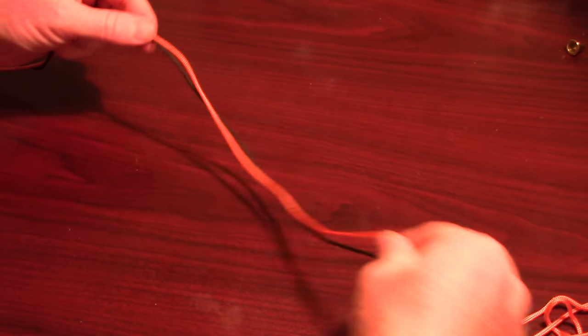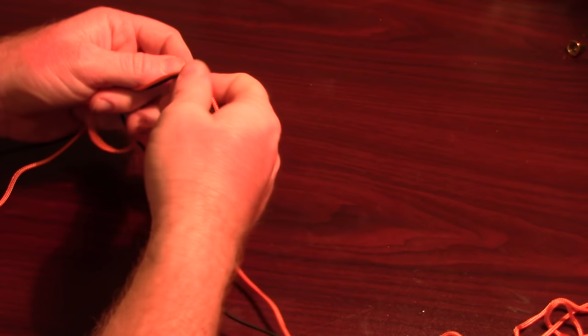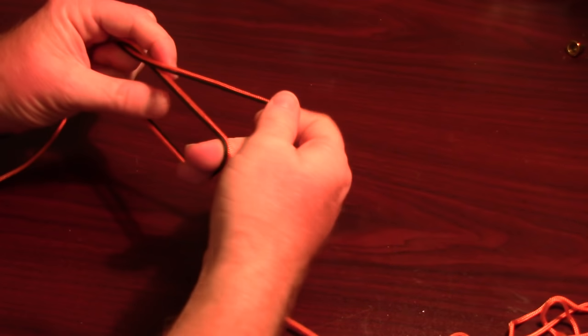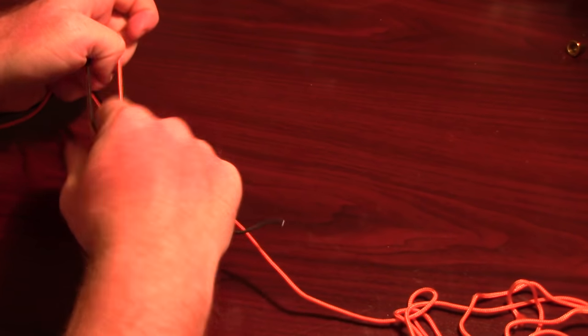Another use for this knot is joining two lines together. Take the two lines and place them together parallel, giving yourself some room to work. Then start making the knot with both.